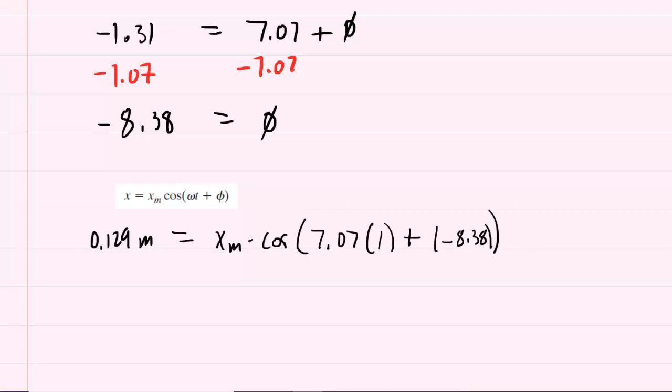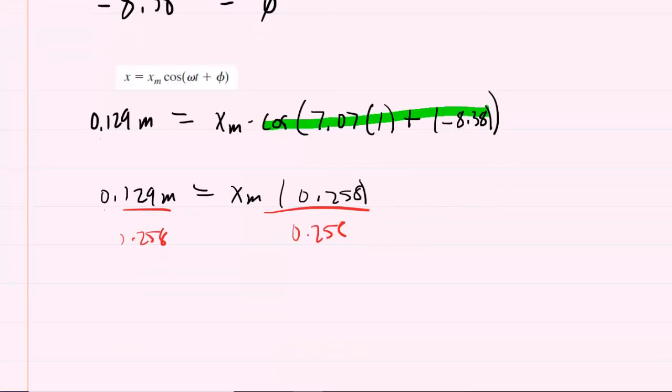Having your calculator still in radian mode, you want to type this entire expression in, and when you do that, you will get about 0.258. So now you have 0.129 meters equals xm times 0.258. Go ahead and divide both sides of the equation by 0.258. And when you do that, you will get your amplitude at approximately 0.5 meters. This is the correct answer to part A of the question.